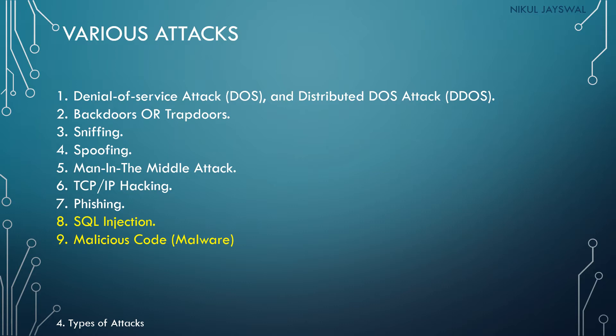Next was TCP/IP hacking. In TCP/IP hacking, we know that for TCP communication we use a 3-way handshake to establish the connection. The attacker will hijack the TCP connection established by two users and use that session or connection to bypass the authentication mechanism in TCP. The last was phishing attack — in phishing we create a fake web page, and it is also called a type of social engineering attack.